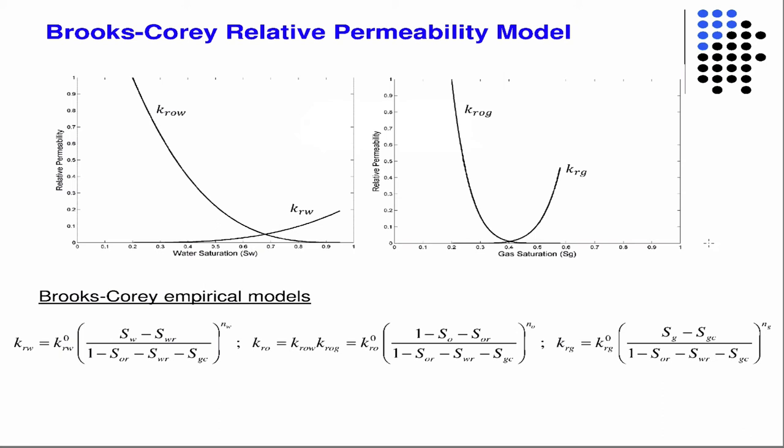And then, of course, there's empirical models where you have these Brooks-Corey empirical models, which you guys have covered. So this now gives us a way to sort of eliminate some of those unknowns. So the relative permeabilities were unknowns, but now we have a function of them as a function of saturation, so we can stick them back into our equations and we have fewer unknowns as a result.